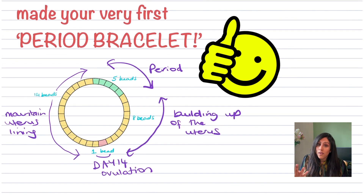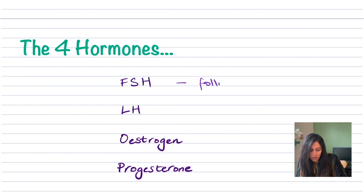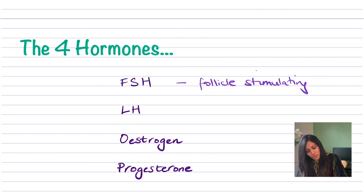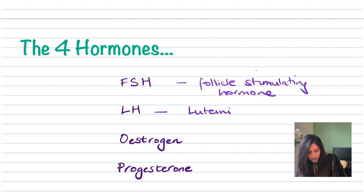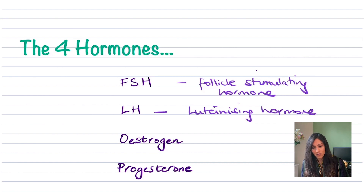What are the four hormones involved in the menstrual cycle? The main ones are FSH — follicle stimulating hormone — LH — luteinising hormone — oestrogen, and progesterone. Those are the four hormones involved in the menstrual cycle.